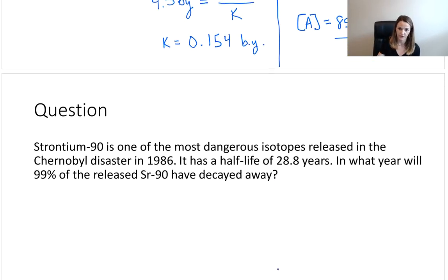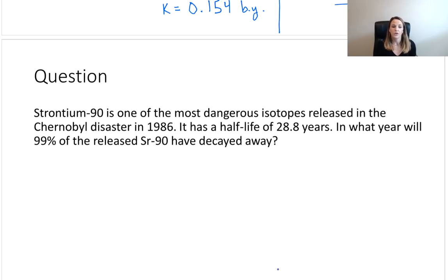Now we're at a second question. Strontium-90 is one of the most dangerous isotopes released in the Chernobyl disaster in 1986. That's the year I was born. It actually happened about a month right before I was born. It has a half-life of 28.8 years. In what year will 99% of the released strontium have decayed away? Try this one.